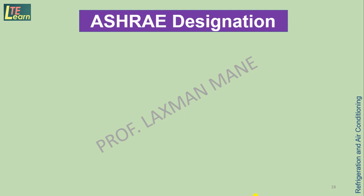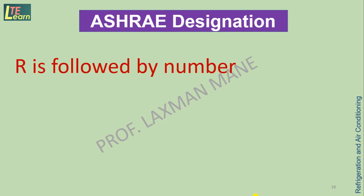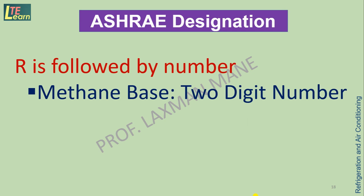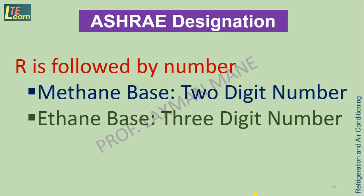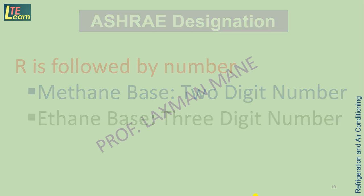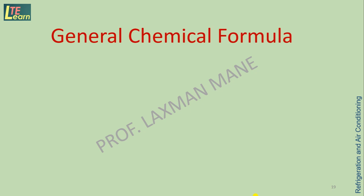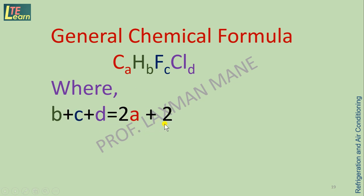Refrigerants are written with a number given by ASHRAE designation. R is followed by a number — for methane-based refrigerants the number is two-digit, and for ethane-based refrigerants it is a three-digit number. The general chemical formula is C_A H_B F_C Cl_D, where A, B, C, D are the number of atoms of carbon, hydrogen, fluorine, and chlorine respectively. The relation between these numbers is: B + C + D = 2A + 2. The ASHRAE designation number is written as R(A−1)(B+1)C.